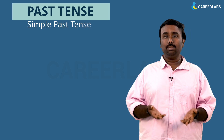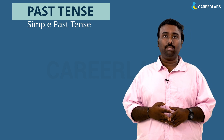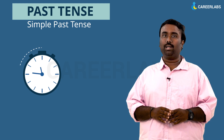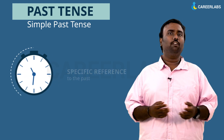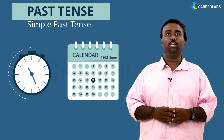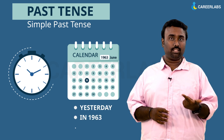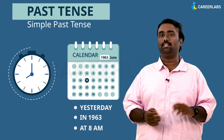Let's begin with the past tense and its aspects. Simple past tense speaks about a time before the present time. The time clue for the simple past tense would be a specific reference to the past — for instance, you would see phrases like 'yesterday,' 'in 1963,' 'at 8 am,' etc. in your sentences.